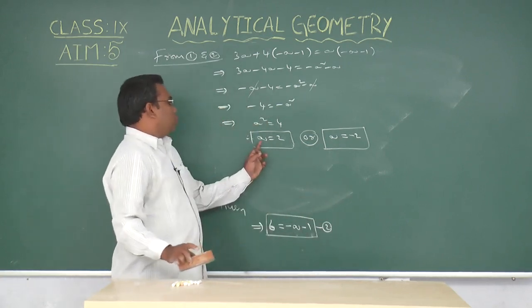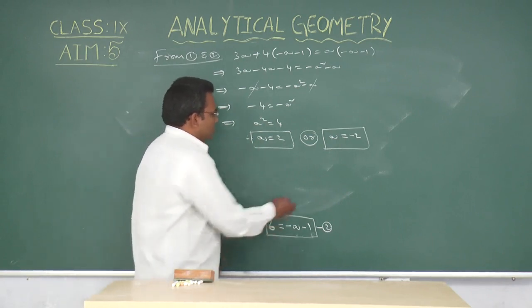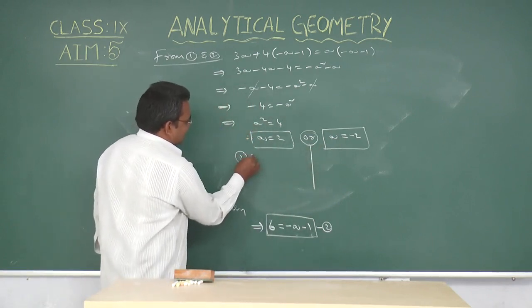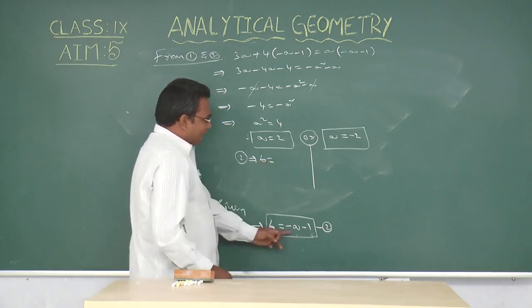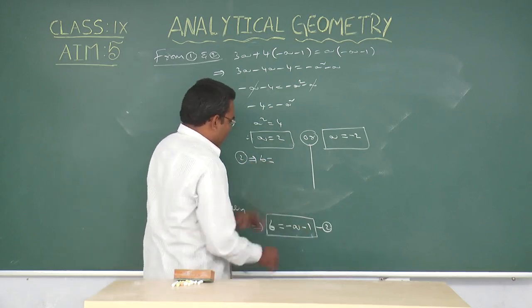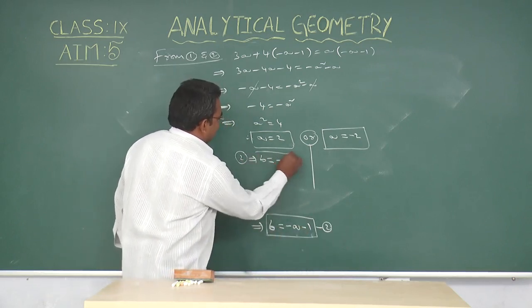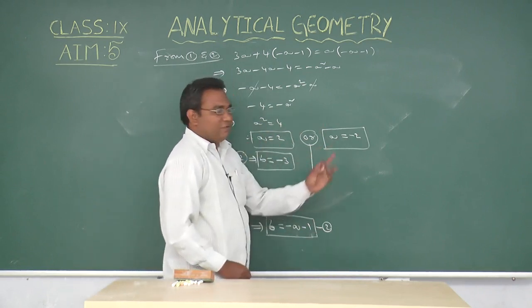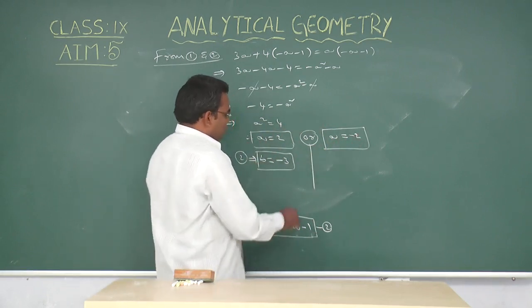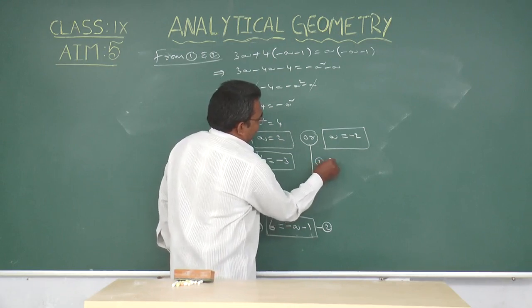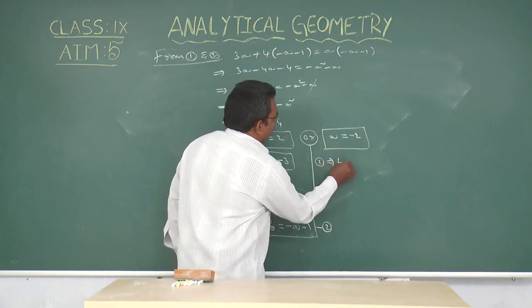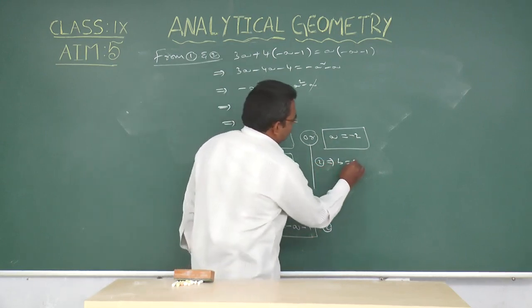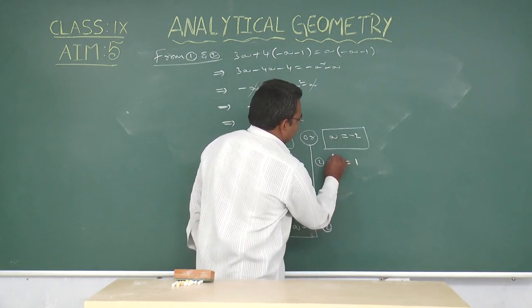If a = +2, from equation 2, b = -a - 1 = -2 - 1 = -3. And if a = -2, from equation 2, b = -(-2) - 1 = 2 - 1 = 1.